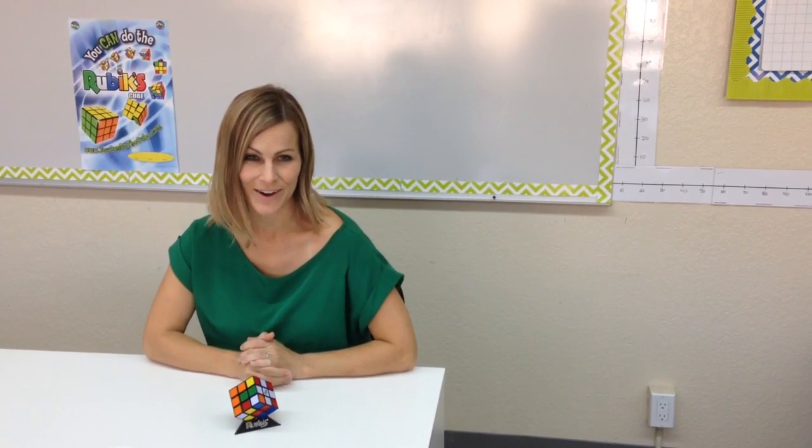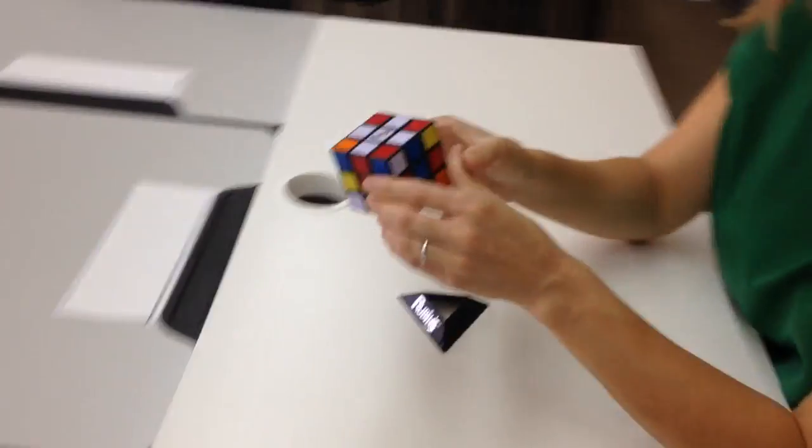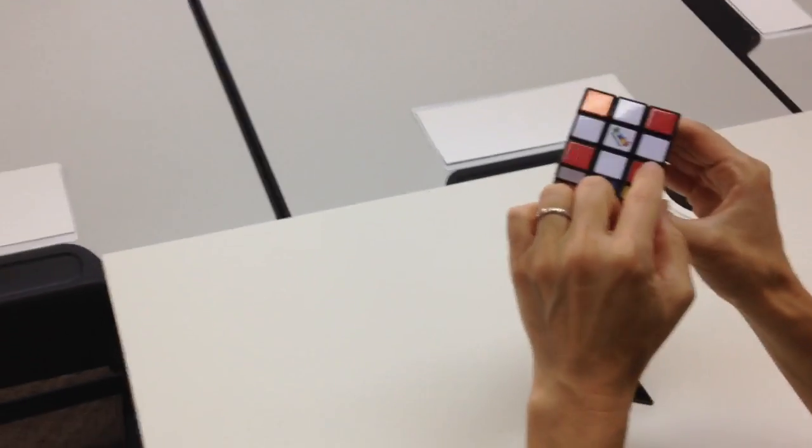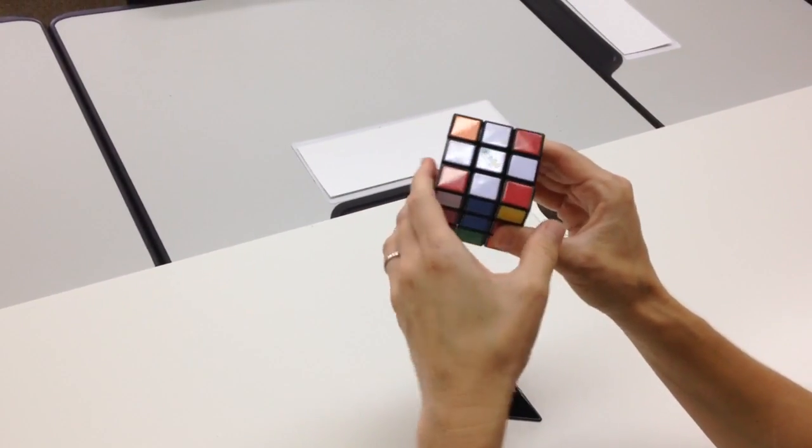Now that we've solved the white cross, we're going to solve the white corners. Each corner piece on the cube has three faces. We want all four white corners in their proper locations.